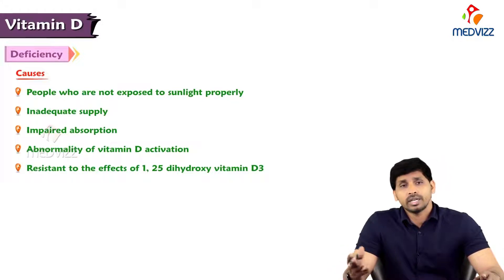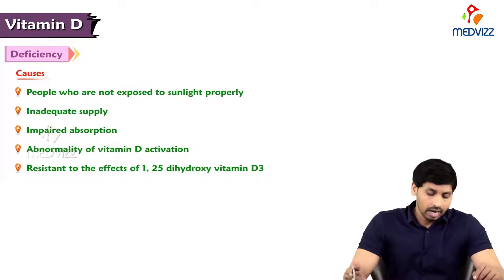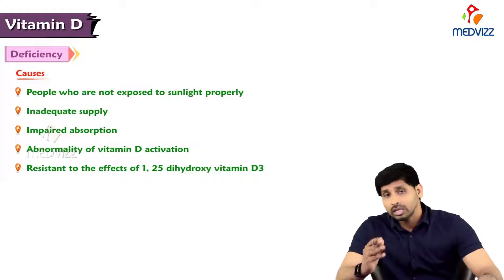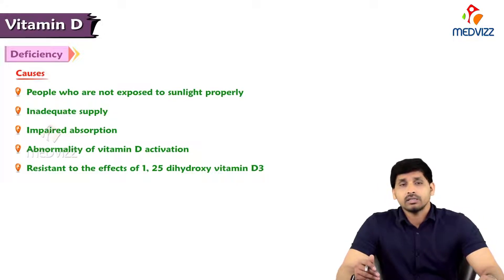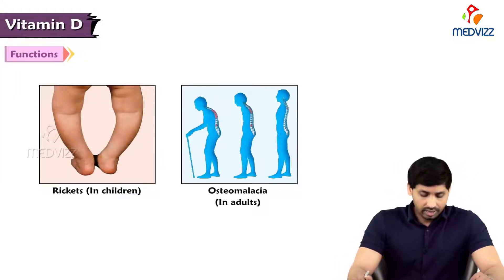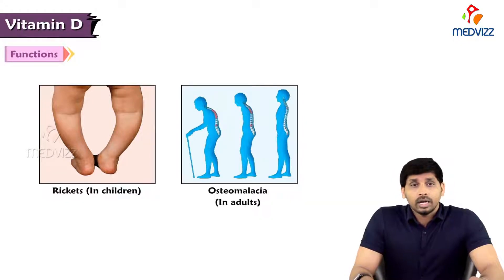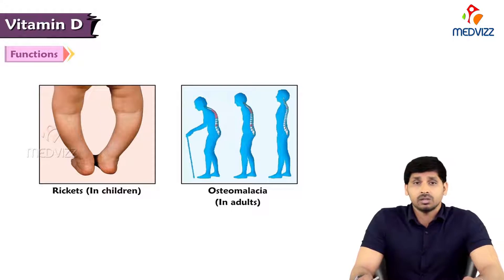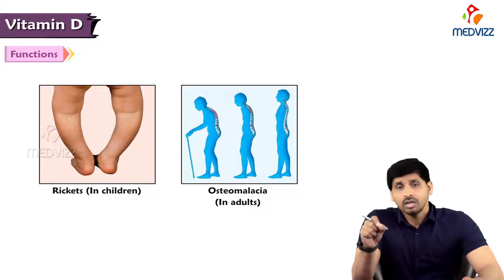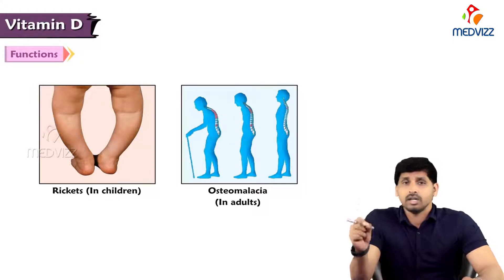All these factors lead to vitamin D deficiency and resistant effects of 1,25-dihydroxy vitamin D. The deficiency of vitamin D causes rickets in children and osteomalacia in adults.